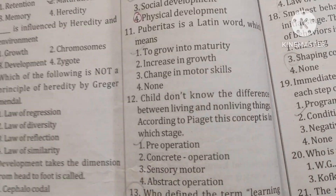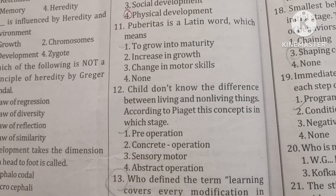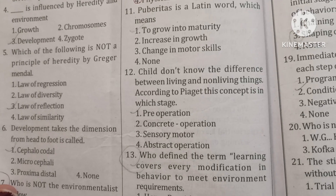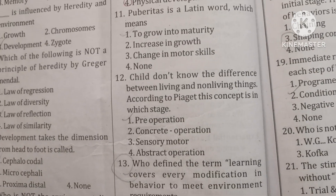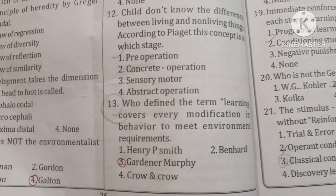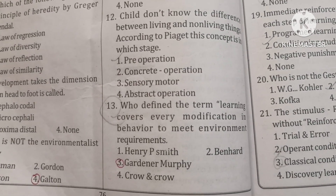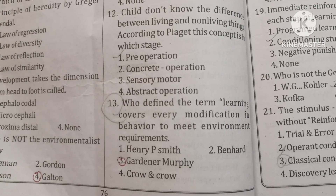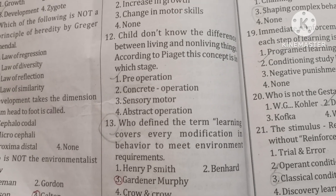Children don't know the difference between living and non-living things. According to Piaget, this concept is in which stage? Pre-operational stage. Who defined the term 'learning covers every modification in behavior to meet environment requirements'? Said by Gardner Murphy.